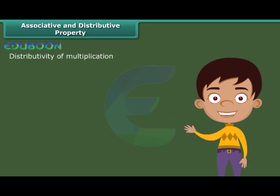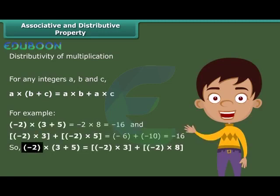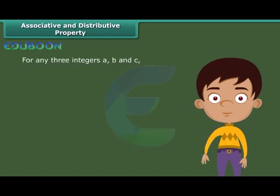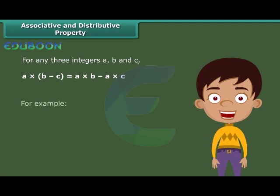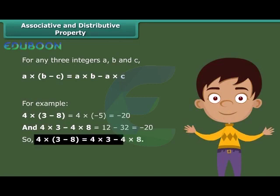Now let us move towards the distributive property of multiplication. For any integers a, b, and c, a into (b plus c) is equal to a into b plus a into c. For example, minus 2 into (3 plus 5) is equal to minus 2 into 3 plus minus 2 into 8. Similarly, for any 3 integers a, b, and c, a into (b minus c) is equal to a into b minus a into c. For example, 4 into (3 minus 8) is equal to 4 into 3 minus 4 into 8.